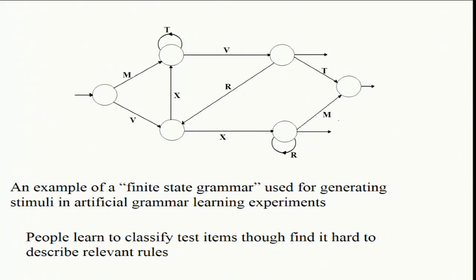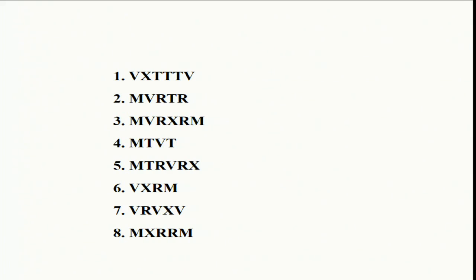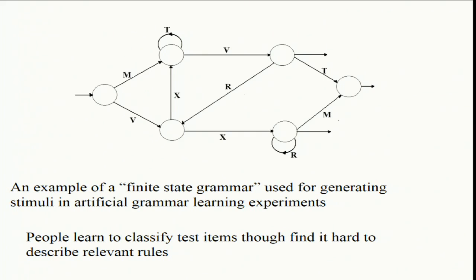What Reber found was this is sufficiently complicated that if you show people around 20 strings without telling them there are rules — just asking them to memorise random strings — people notice some things consciously, like which letters can start strings (M and V), and what letters can repeat. Those are the sorts of rules they'd readily report. The grammar was sufficiently complicated that there seemed to be aspects people would readily report and other aspects they didn't tell him when asked. But not so complicated they couldn't learn it at all. That was his argument for it being unconscious — when you ask people to describe the rules, they said some simple things, but their performance seemed to be better than the rules they described.